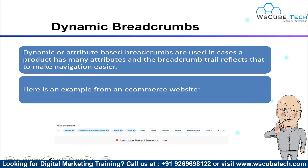Next, we have dynamic breadcrumbs. Dynamic or attribute-based breadcrumbs are used when a product has many attributes. For example, on an e-commerce website, a product might belong to shoes, sneakers, flats, and masks — these are the attributes of the specific product. This type of breadcrumbs simply reflects those attributes to make navigation easier.